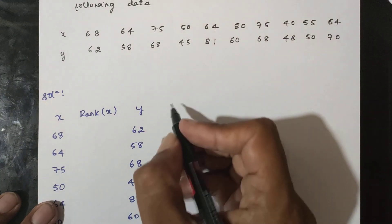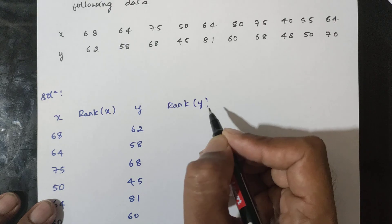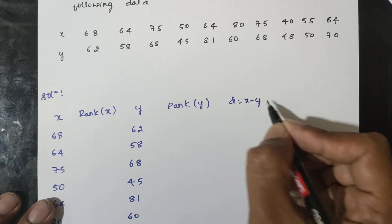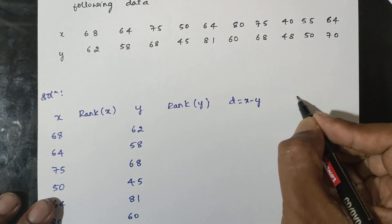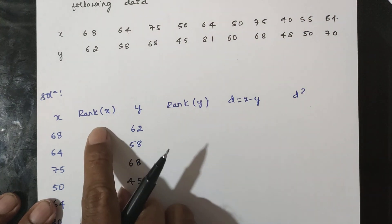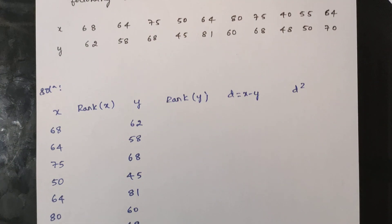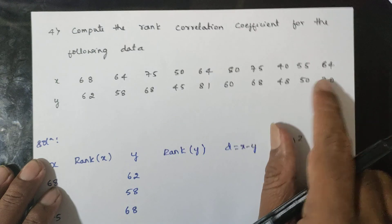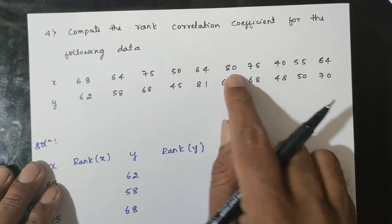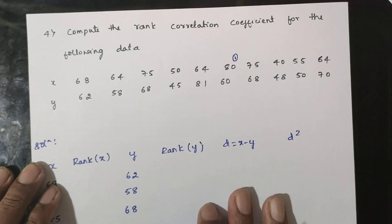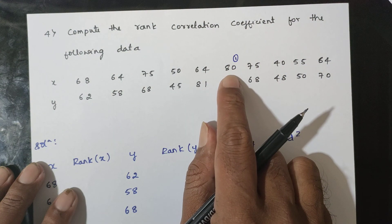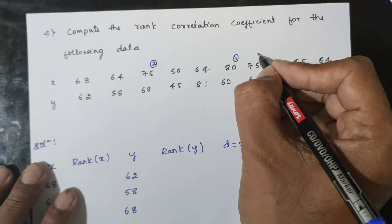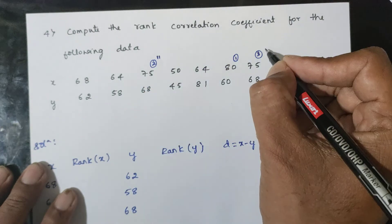Set up rank Y. Find rank Y1 and rank Y2. D is equal to rank X minus rank Y. We can multiply rank X minus Y. Note that 75 appears twice — it is the second and third time. This is double data.